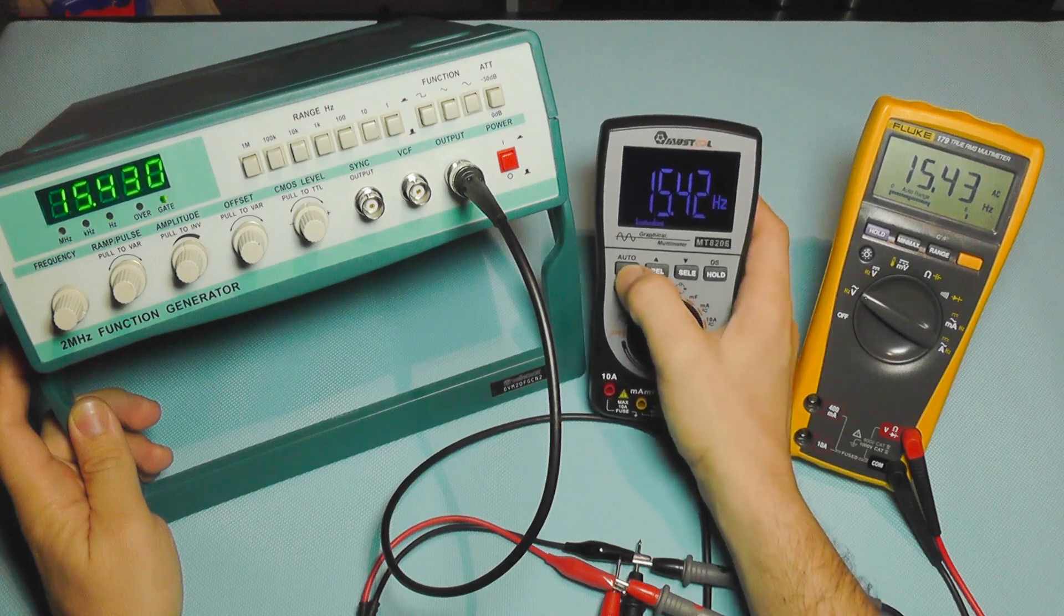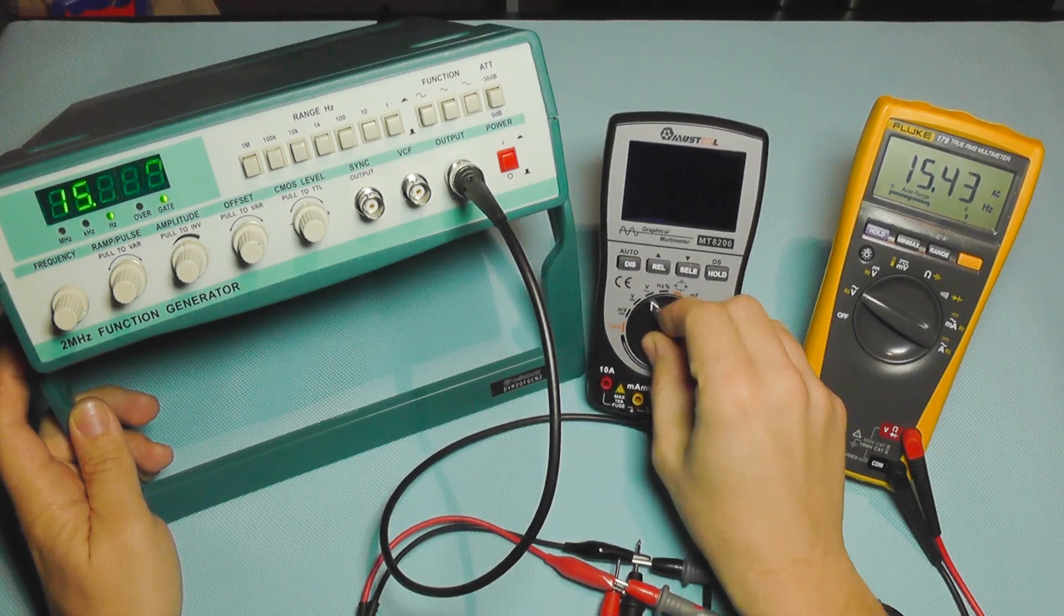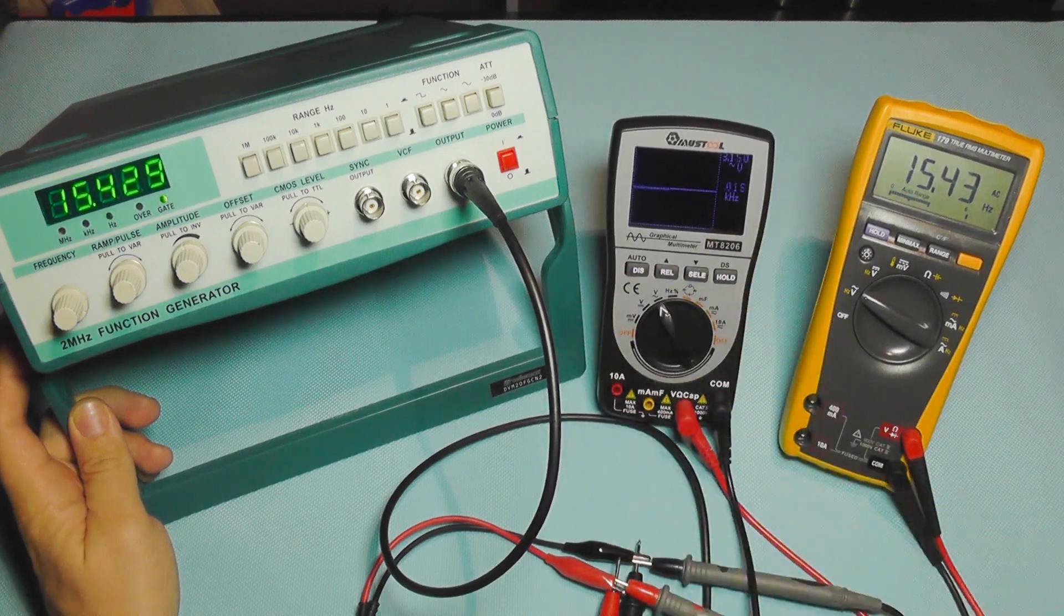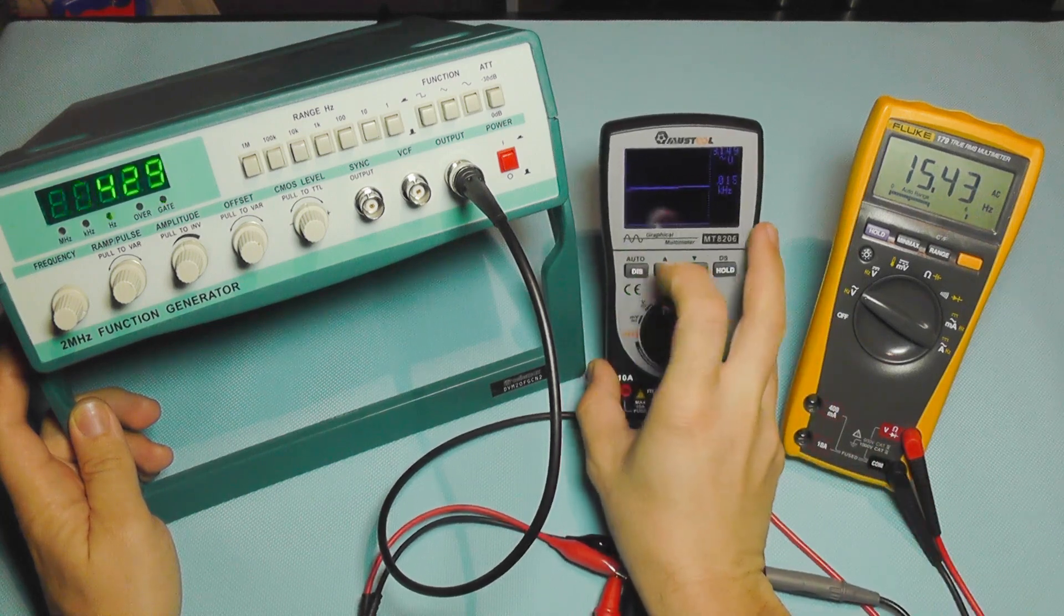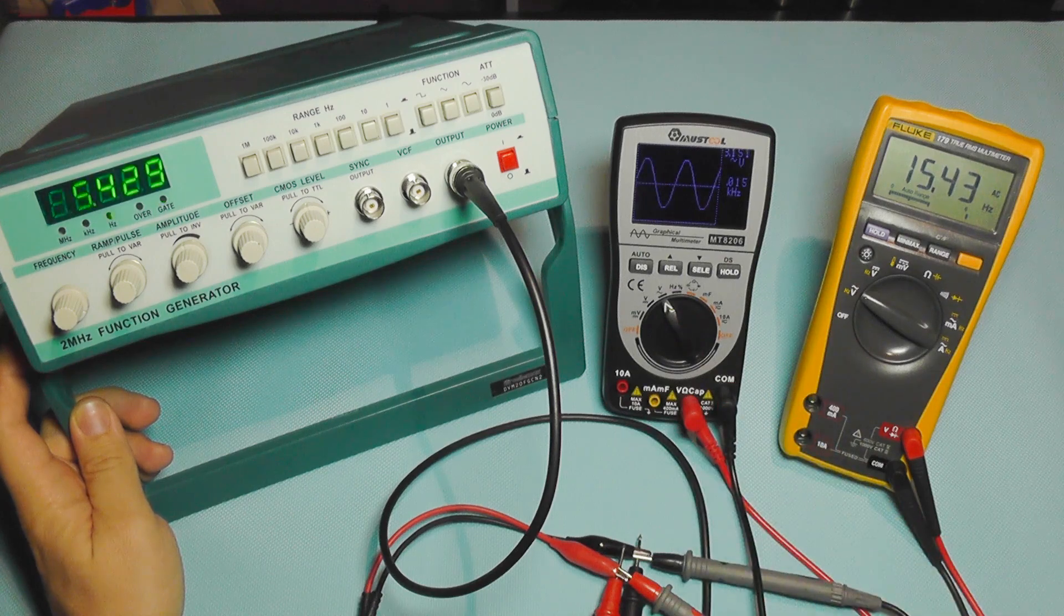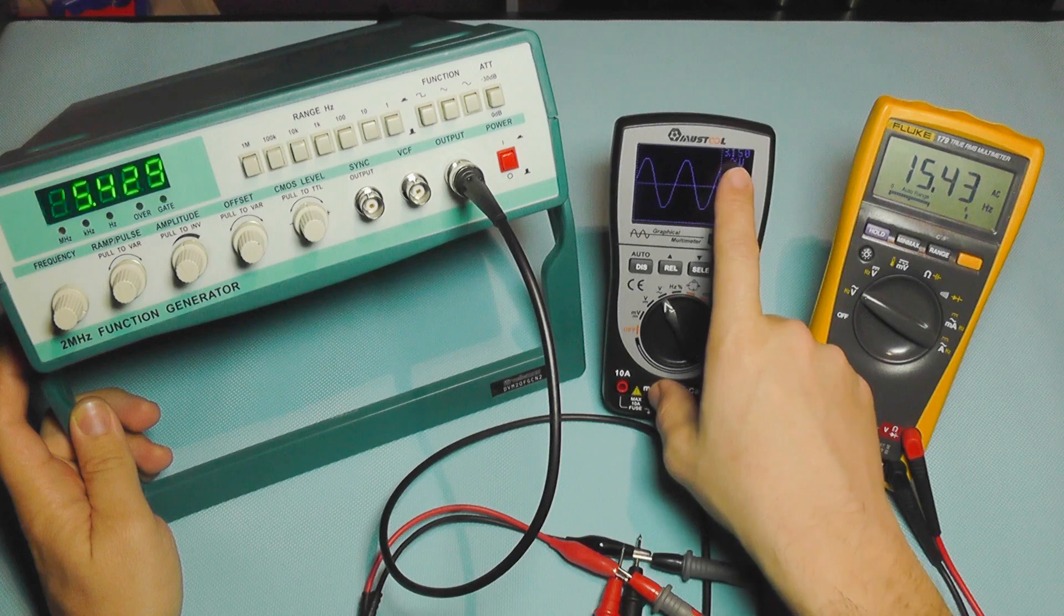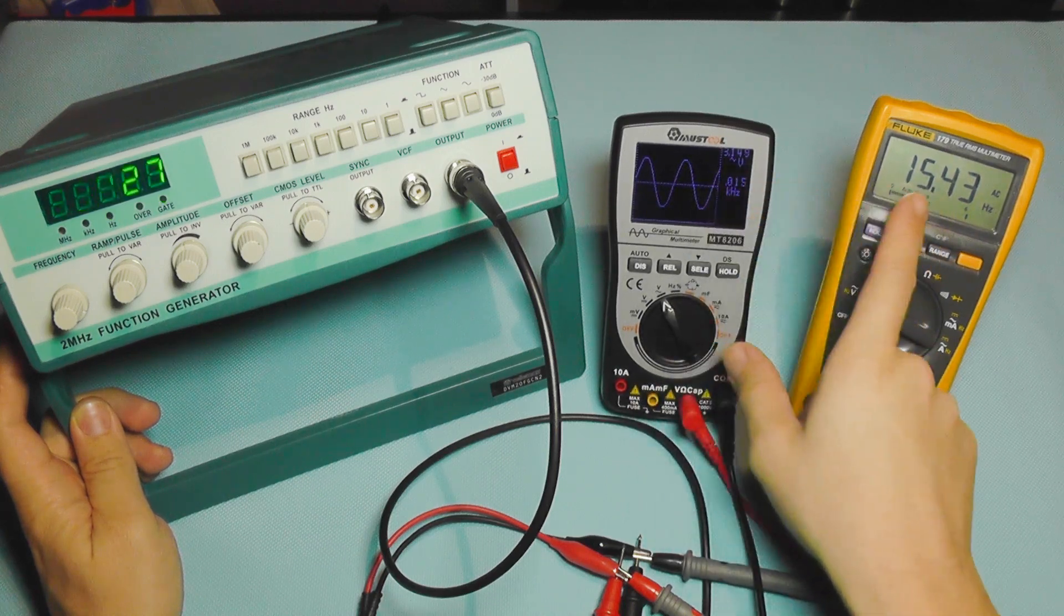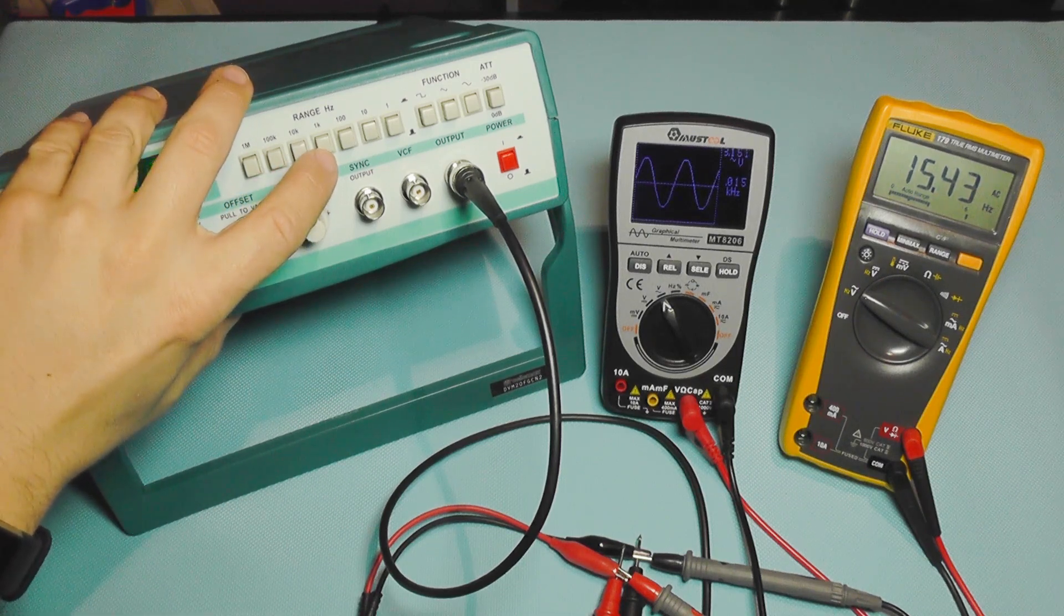Now I'm going to go to the graphical mode. 15.43 Hertz. I need to go to AC voltage and I'm going to wait a bit for it to settle. I'm going to press this auto switch and we have the waveform. Now it shows the frequency and the voltage, and the voltage is still similar with this one, so there's not much deviation.